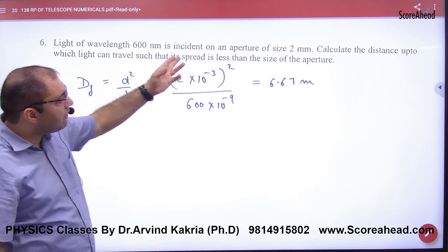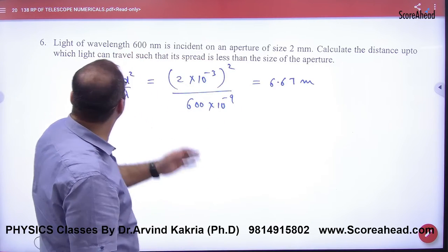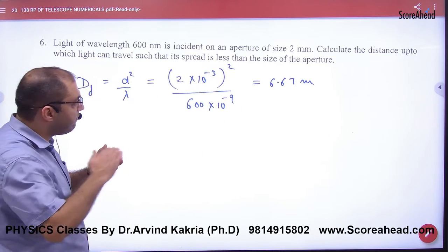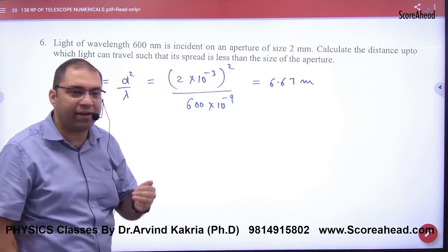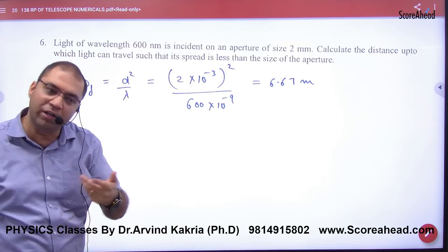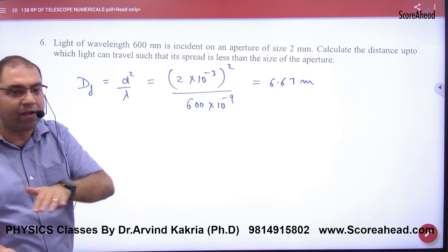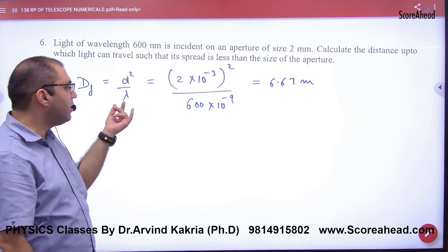Light of wavelength given, aperture size given. Calculate distance up to which the light can travel such that spread is less than the size of the aperture. One time spread is bigger, one time spread is smaller. So what distance would you like? Screen and slit is known as Fresnel distance.